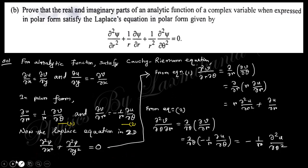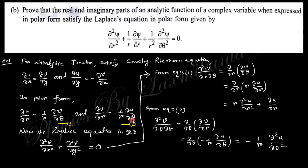Moving to question 2b: prove that the real and imaginary parts of an analytic function of a complex variable, when expressed in polar form, satisfy the Laplace equation. The analytic function satisfies the Cauchy-Riemann equations in Cartesian coordinates (x, y). When transformed to polar coordinates, the equations take a different form, which was already proved in a previous lecture.